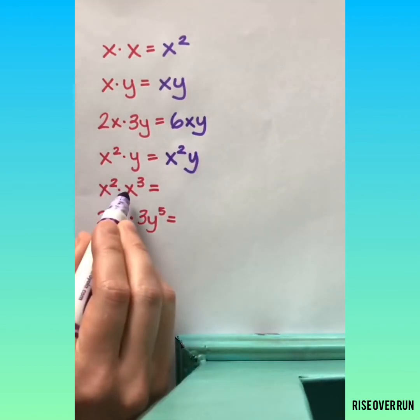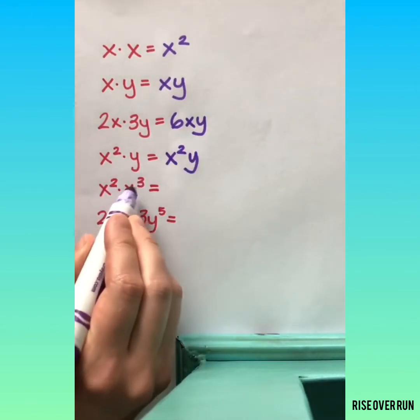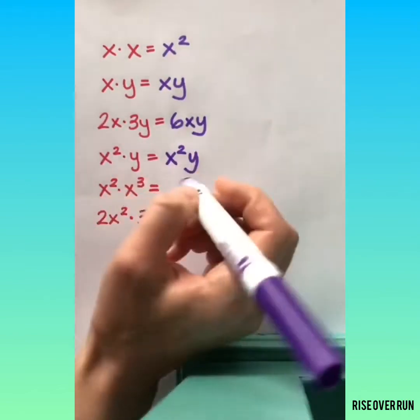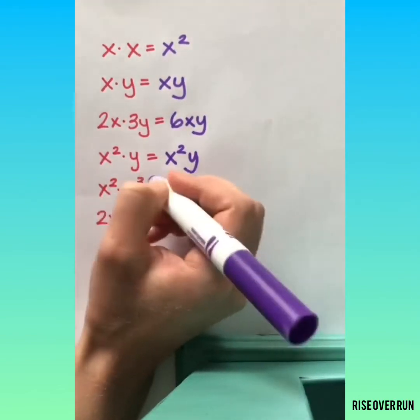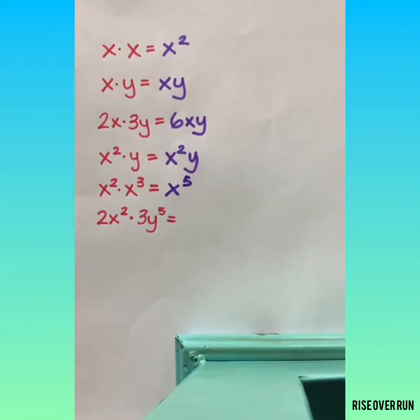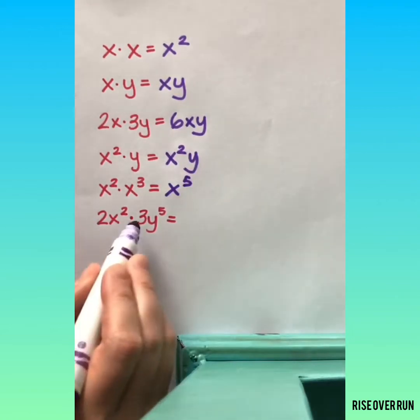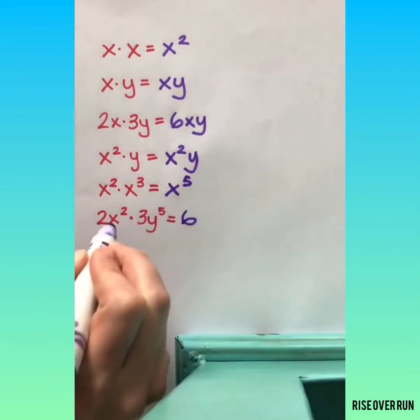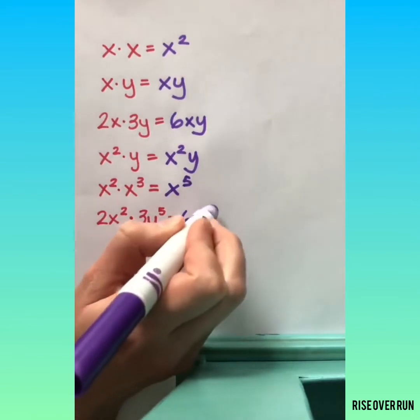x squared times x to the third power, or x cubed, remember your exponent rules, that's product rule, and we will add those exponents. Here we'll multiply the coefficients, but the variables are different, so we keep them.